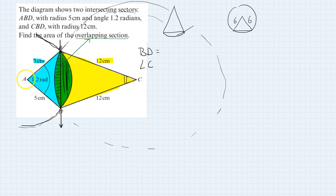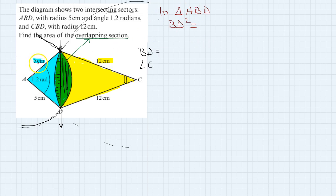We can find BD from triangle ABD. In triangle ABD, BD squared equals—we are using the cosine formula when all three sides are known to us.